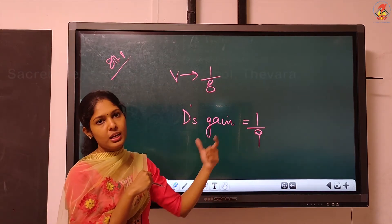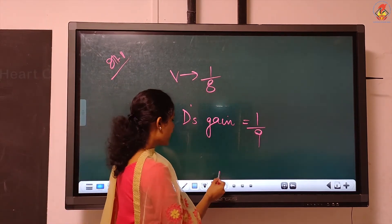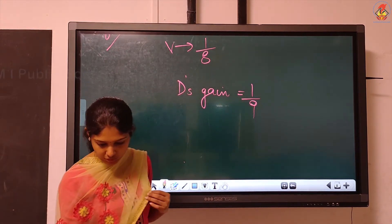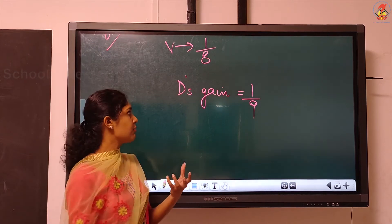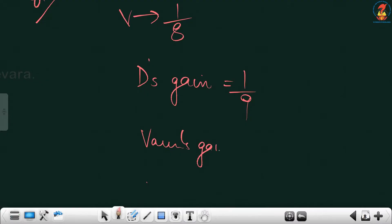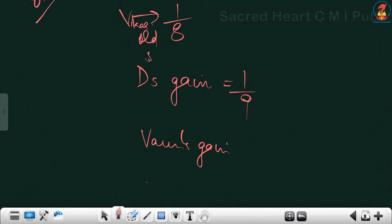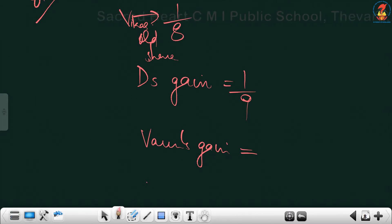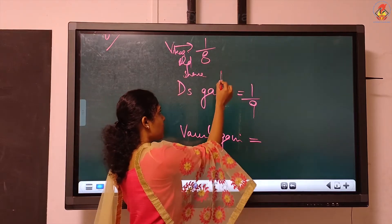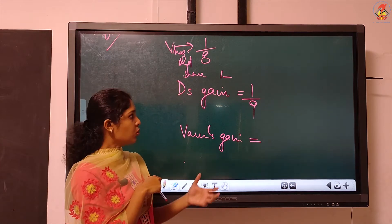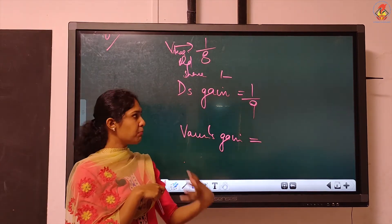Indirectly they have mentioned the gaining proportion. Divya's gain is 1/9, which is directly given, and the remaining is in favor of Varun. Varun's gain — we can't simply do 1 minus 1/9, because 1/9 is the gaining proportion of Divya.